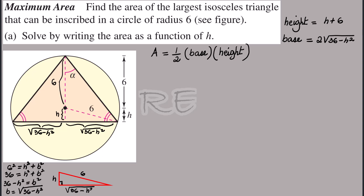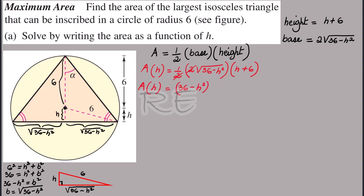Now that we have everything in place, we can write the area in terms of h. It will be one half times the base, which is 2 times the square root of 36 minus h squared, times the height, which is h plus 6. We simplify by 2 and write the square root with a fractional exponent, giving us 36 minus h squared to the one half, times h plus 6.